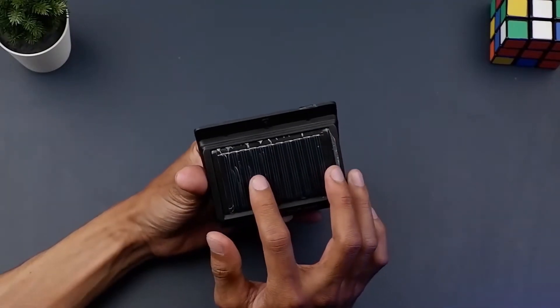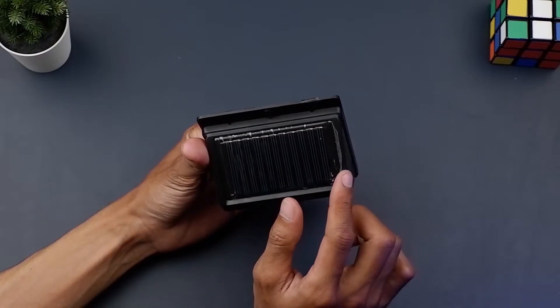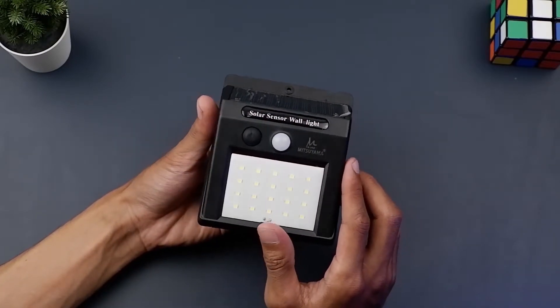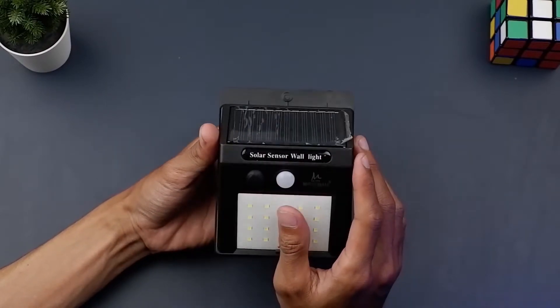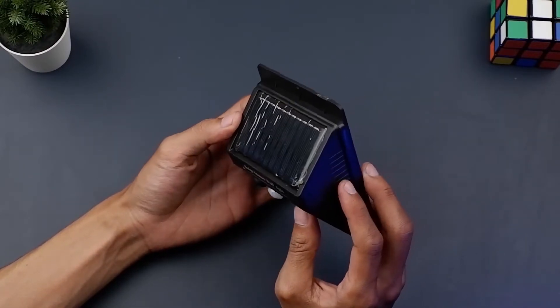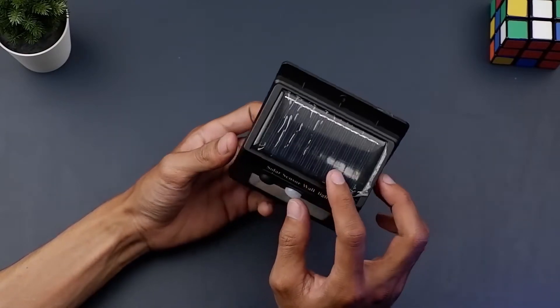Lalu disini letak dari solar panelnya. Plastik pelindungnya bisa kalian keletek nanti jika akan dipasang agar cahaya matahari yang masuk nanti bisa maksimal. Di dalam solar panel ini sudah terdapat sensor cahaya. Jadi jika malam atau gelap maka otomatis akan nyala.